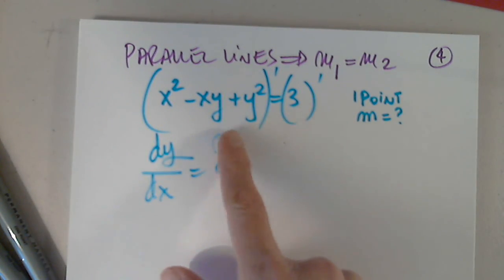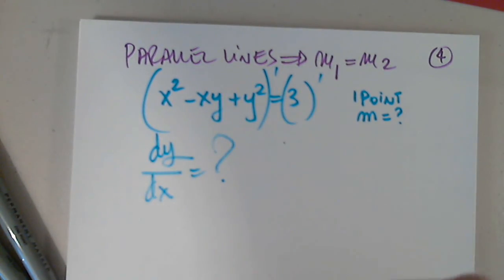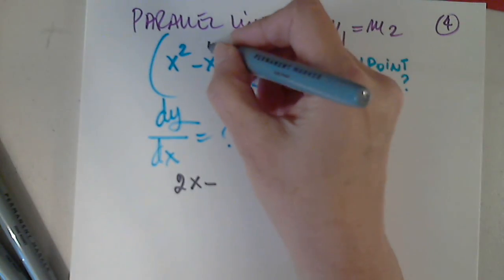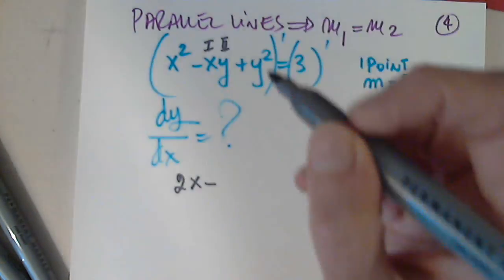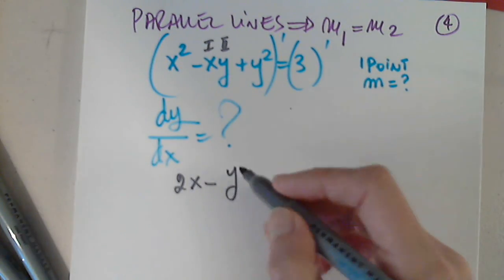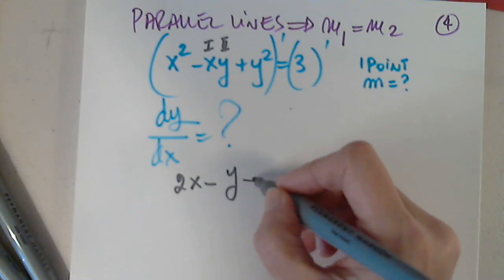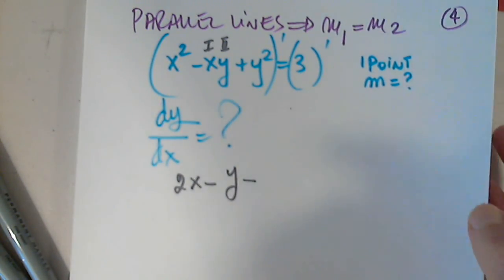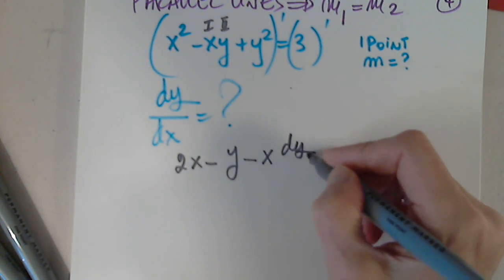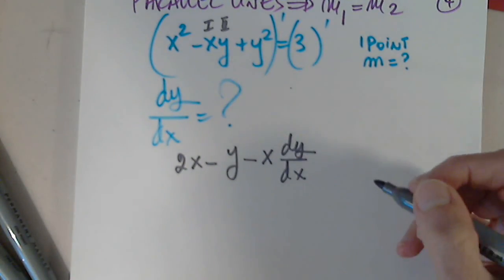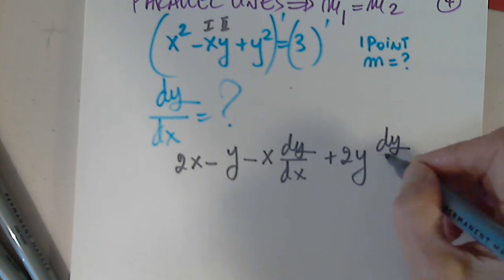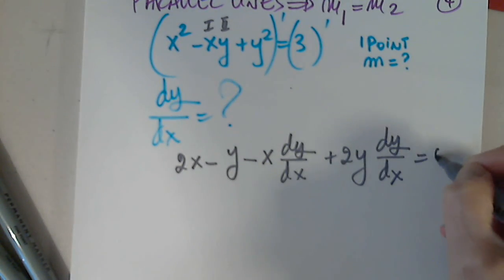We are going to determine dy/dx. We have 2x minus function 1, function 2. The first function prime is 1 times the second one. Don't forget to distribute the minus — I normally put parentheses to avoid confusion. So we have x times dy/dx, then plus 2y times dy/dx, and the right-hand side is 0.